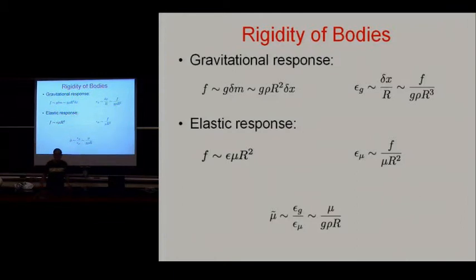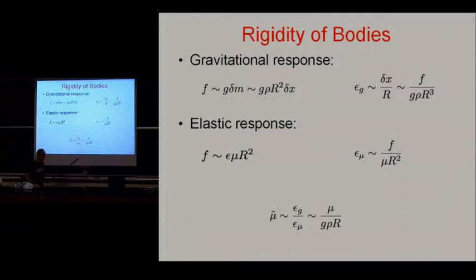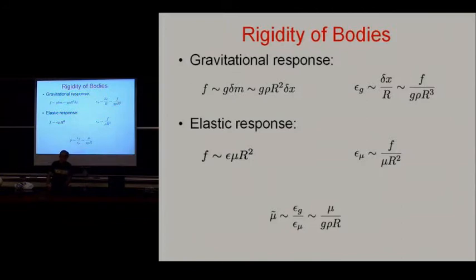A typical rigidity for rock is related to the binding energy of molecules. In CGS units it's maybe 3 to 5 × 10¹¹ dynes per square centimeter. The pressure at the center of the Earth is about 10 times higher than that — rocks are really squeezed in the center of the Earth. The center of the moon actually has a slightly lower density than the moon on average, because the pressure isn't high enough to cause much squeezing, and the temperature is a little higher than on the surface, so there's thermal expansion.